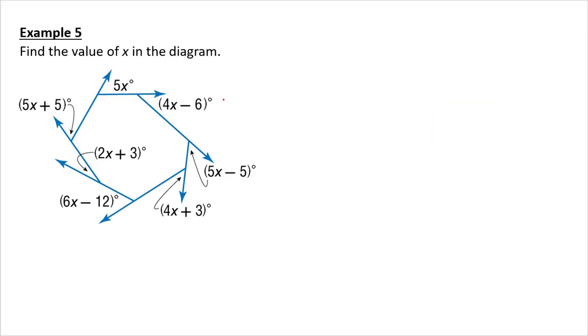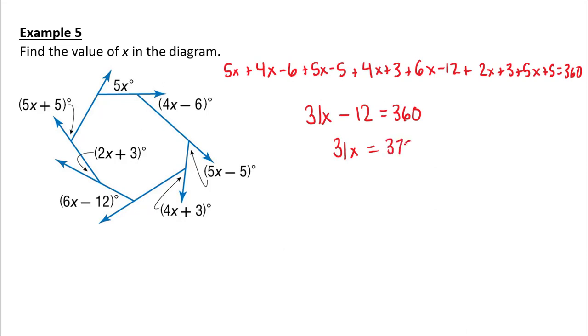Find the value of x in the diagram. So I have one vertex at each angle, so these angles have to equal 360. So simplifying all that out, combining all my x's, I get 31x. Combining all the other numbers, we get 12 is equal to 360. 31x is equal to, I add 12, we get 372. x is equal to 12.